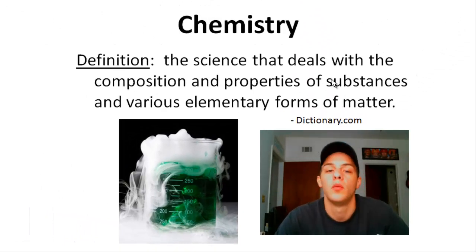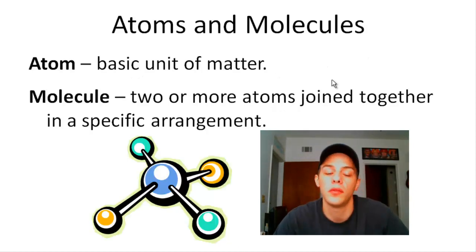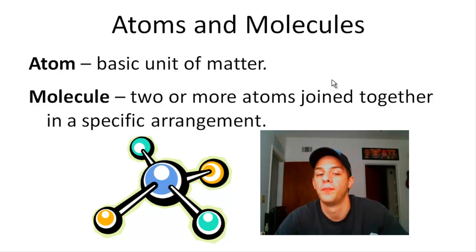And one of the common themes that helps us answer these questions is the idea that the behavior of matter is dependent upon the properties of the individual atoms and molecules that compose the matter. So with that I'd like to talk about atoms and molecules a little bit. An atom is basically just a basic unit of matter. And molecules are basically just a step up from atoms. A molecule is two or more atoms joined together in a specific arrangement.